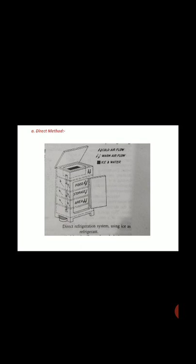Cold air, due to high density, flows downward into the storage space. Cold air is warmed by absorption of heat from the product to be cooled and rises through the space due to lower density. It returns to the ice space, and a circulation of air is maintained so long as the air is cooled in the ice space — the cycle repeats again and again. This method is generally used for cooling drinks in hotels.